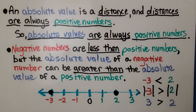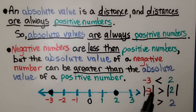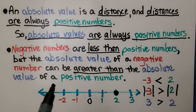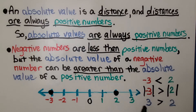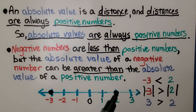Negative numbers are less than positive numbers, but the absolute value of a negative number can be greater than the absolute value of a positive number. Here we have negative 3 and positive 2, and negative 3 is less than positive 2. But the absolute value of negative 3 is greater than the absolute value of 2 — it's its distance from 0. This is 3 jumps from 0 and 2 jumps from 0, so the absolute value of negative 3 is 3 and the absolute value of positive 2 is 2, and 3 is greater than 2.